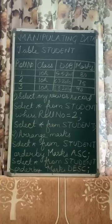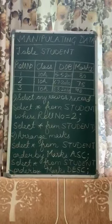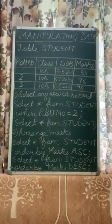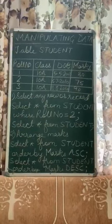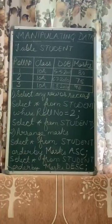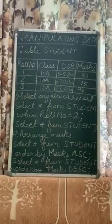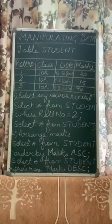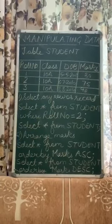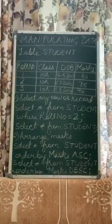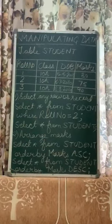In a database we can retrieve or get data from the table. Now, if you want to select any row or record — suppose you want to select the second row — you will write the select query as: SELECT * FROM student WHERE RollNumber = 2 followed by a semicolon.